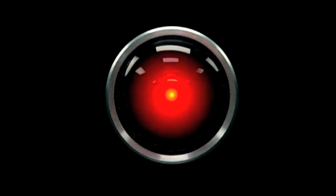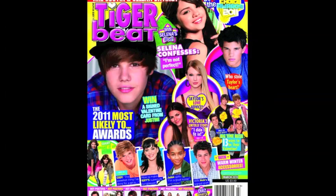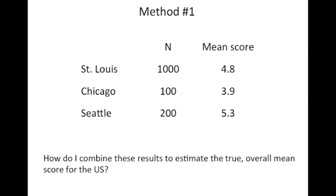Feeling happy about our study, we publish our findings in a reputable journal with a high impact factor. Feeling that we can improve the accuracy of our estimate by performing a meta-analysis of existing studies on Bieber fever, we search the literature and find two additional studies, each using versions of the HAL computer with methods similar to our own, but performed in two different cities. A smaller study of 100 patients in Chicago resulted in a mean Bieber fever score of 3.9, and a third study performed in Seattle resulted in a mean score of 5.3.